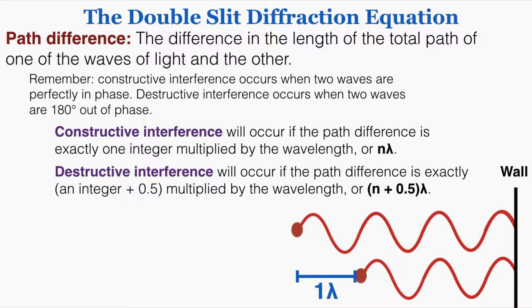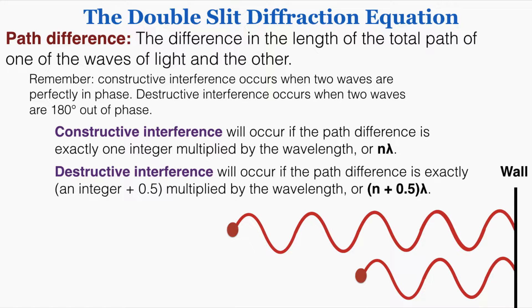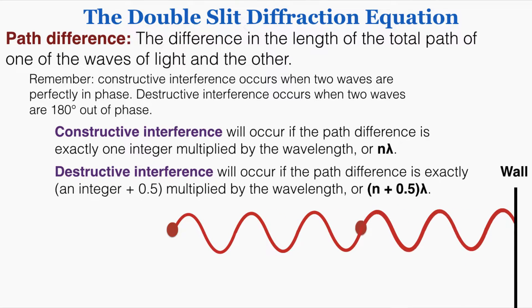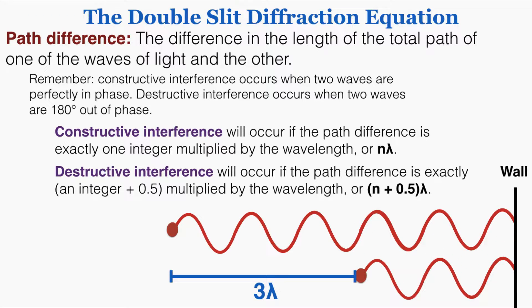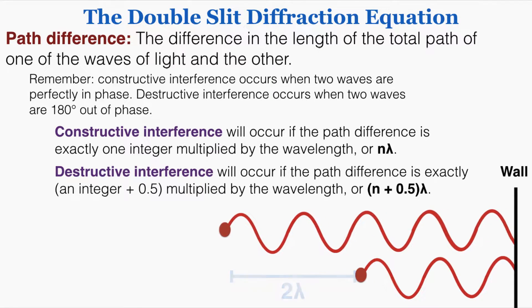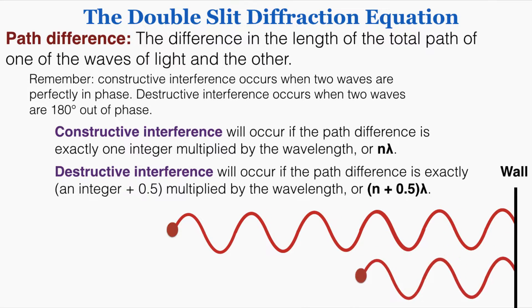We can figure out where the next constructive interference pattern will occur by changing the path difference. The next place where perfectly constructive interference occurs is when the path difference is exactly two wavelengths long, and then three wavelengths long. This proves the rule that constructive interference will occur if the path difference is exactly n times lambda — n being an integer and lambda being the wavelength. As long as you have complete wavelengths of path difference, constructive interference is going to occur.